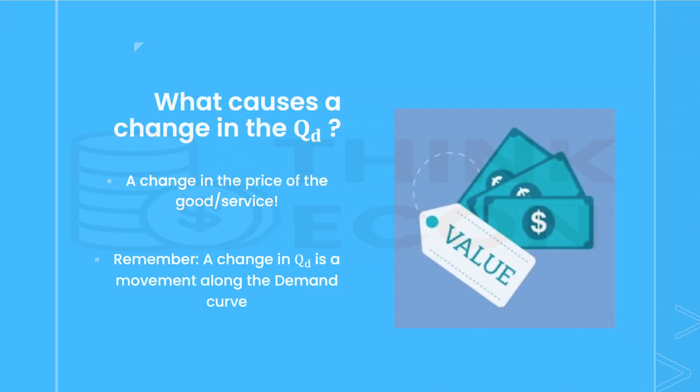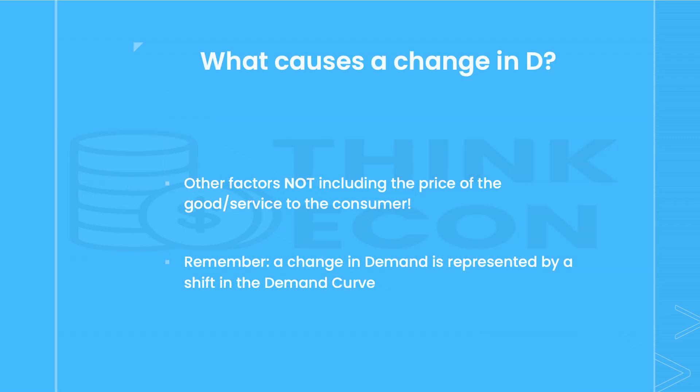So what causes a change in quantity demanded? Well, any change in the price of the good or service. Typically, as the price of the good increases, you would demand less due to the law of demand, which implies a movement to the left along the demand curve. So if a change in the price of a good changes quantity demanded, causing a movement along the demand curve, then what constitutes a change in demand or a shift in the entire demand curve? That would simply be all factors that are not a change in the price of the good or service to the consumer.